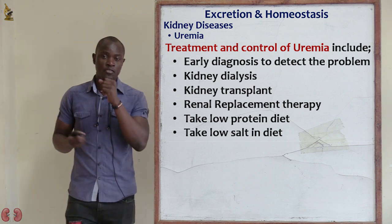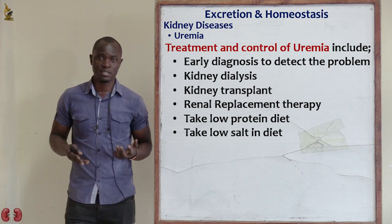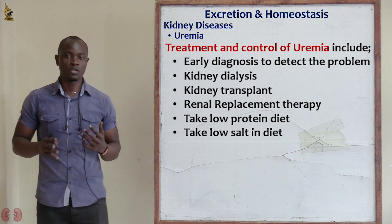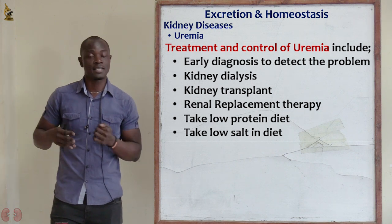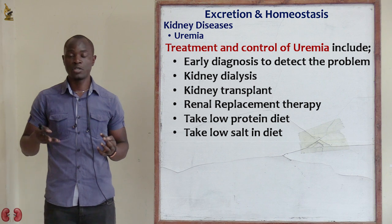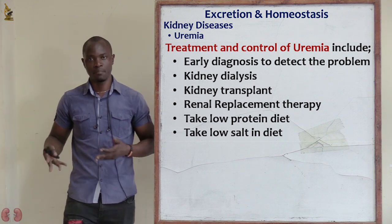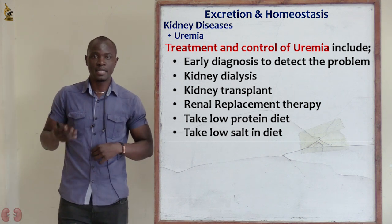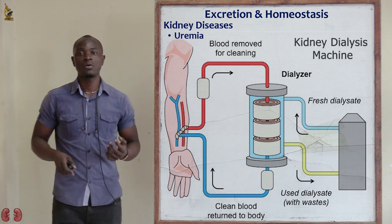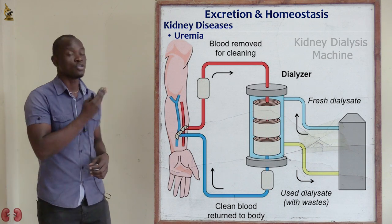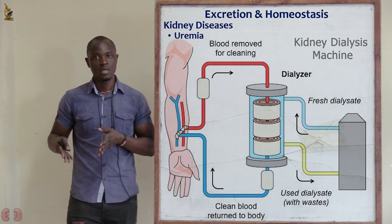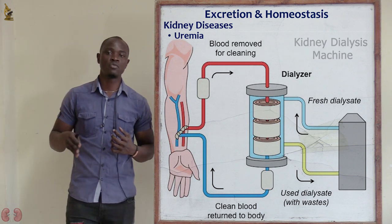What are the treatments and control of uremia? The first is early diagnosis to detect the problem. If it can be detected earlier, you can be treated even faster, and the disease might not make a stride in the body of the victim. Apart from early diagnosis, we also have kidney dialysis in order to remove excess urea from the blood.